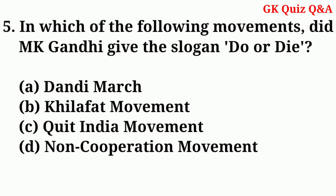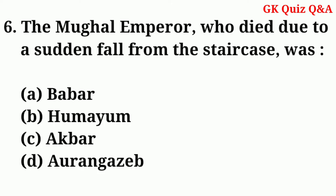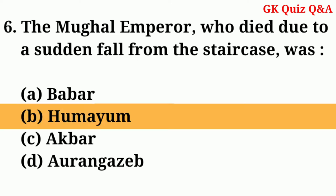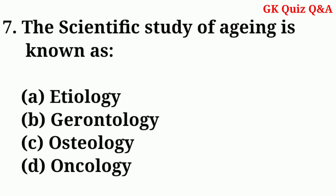In which of the following movements did M.K. Gandhi give the slogan 'Do or Die'? Answer: C — Quit India Movement. The Mughal Emperor who died due to a sudden fall from the staircase was — Answer: B — Humayun.